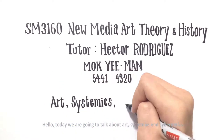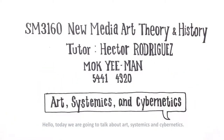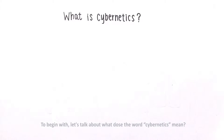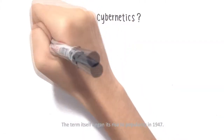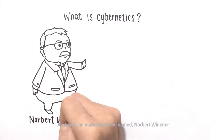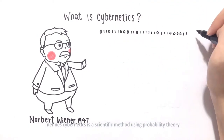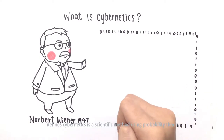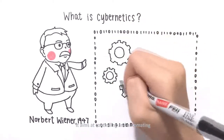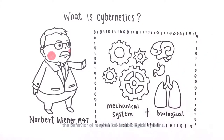Hello, today we are going to talk about art, systematics and cybernetics. To begin with, let's talk about what the word cybernetics means. The term itself began its rise to popularity in 1947. An American mathematician named Norbert Wiener defined cybernetics as a scientific method that uses probability theory to control the transmission of information. It aims at controlling and automating the behavior of mechanical and also biological systems.